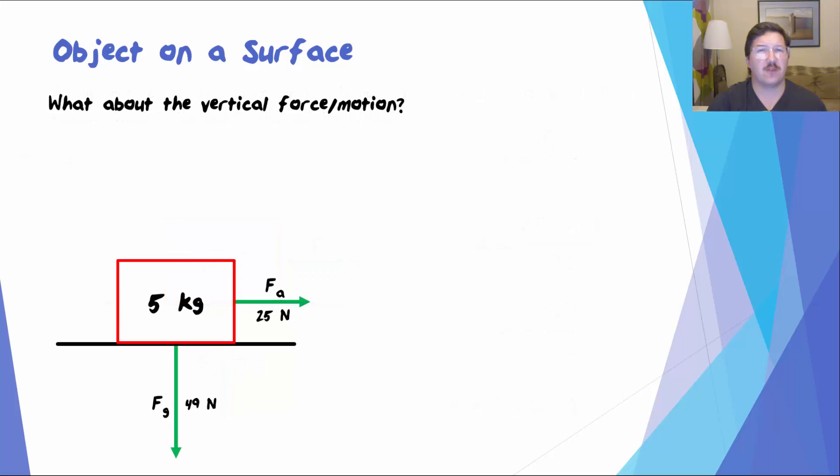What about the vertical forces involved in this problem, or the vertical motion? Well, this object is on the surface and is being dragged to the right. It doesn't have any vertical motion. It's not accelerating up or down. Let's take a look at what we find if we apply Newton's second law to the vertical forces and motion of this object. So we know the acceleration is 0, and we have a force down of 49 newtons and up of 0 newtons. But something doesn't look quite right here. This equation doesn't work out. What's going on? Well, it turns out that we're missing a force.